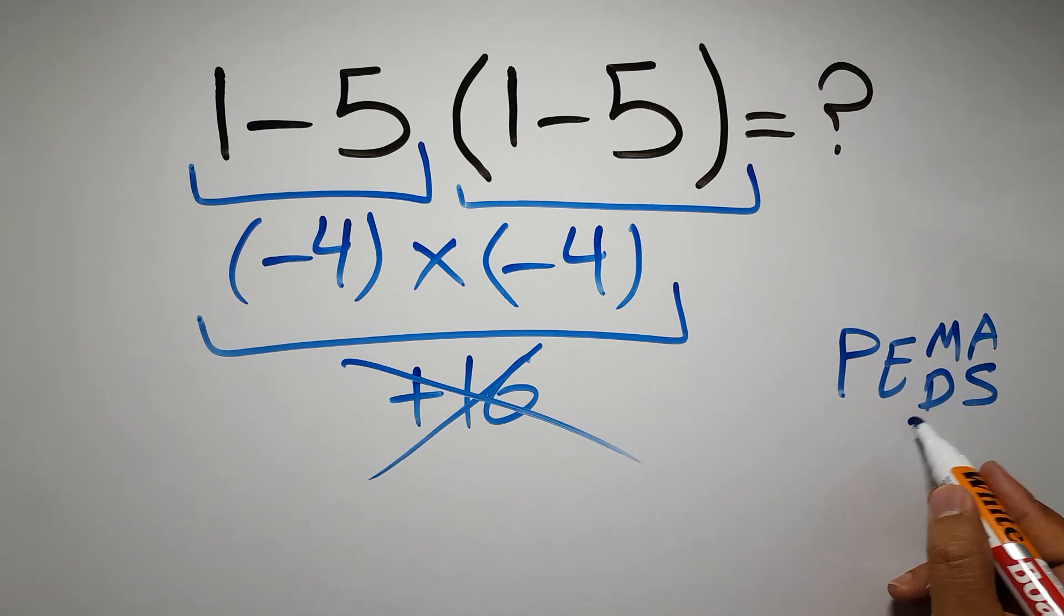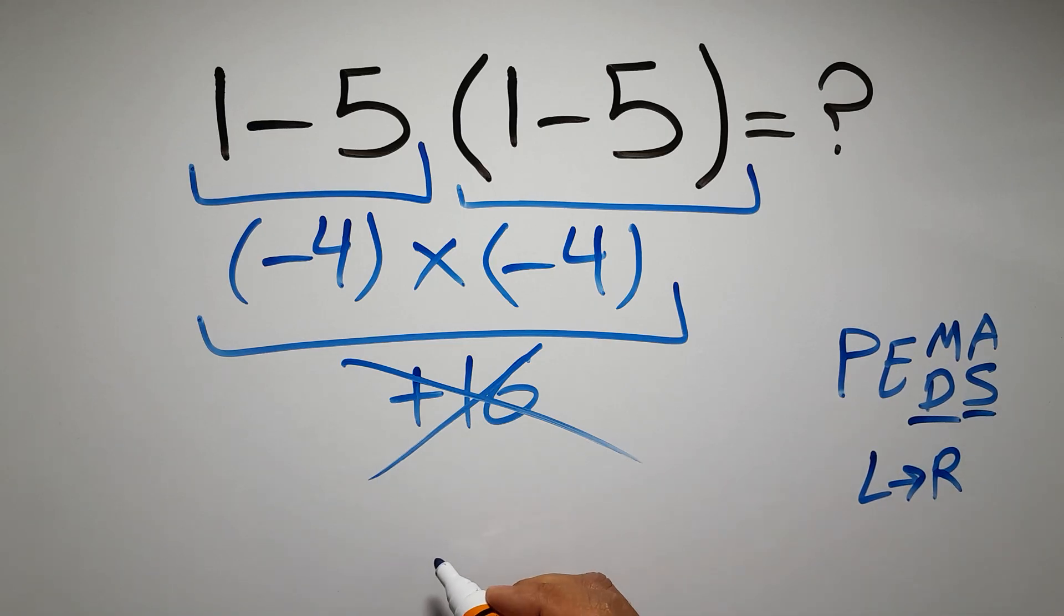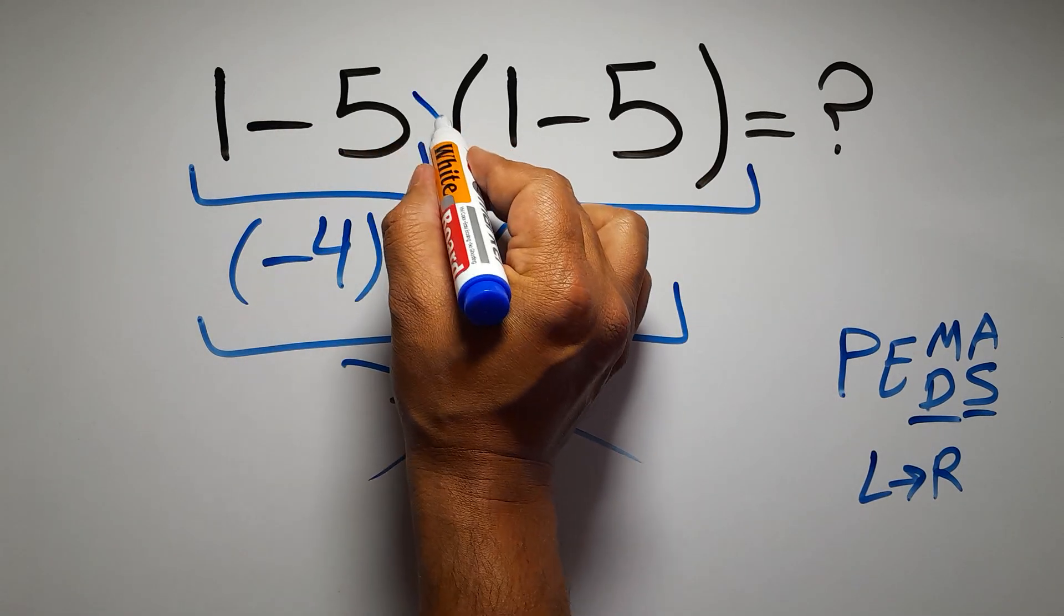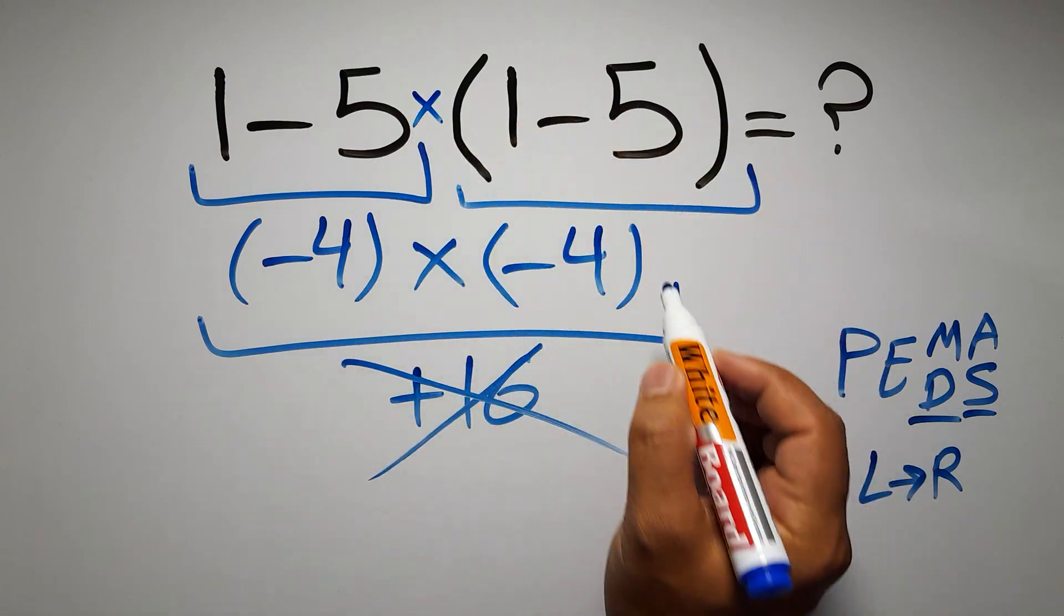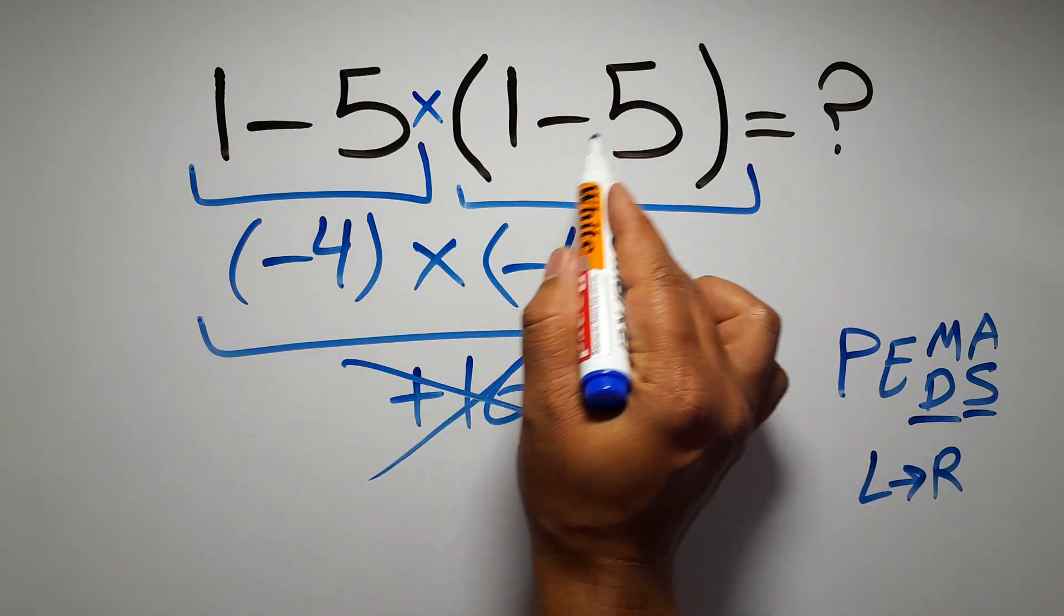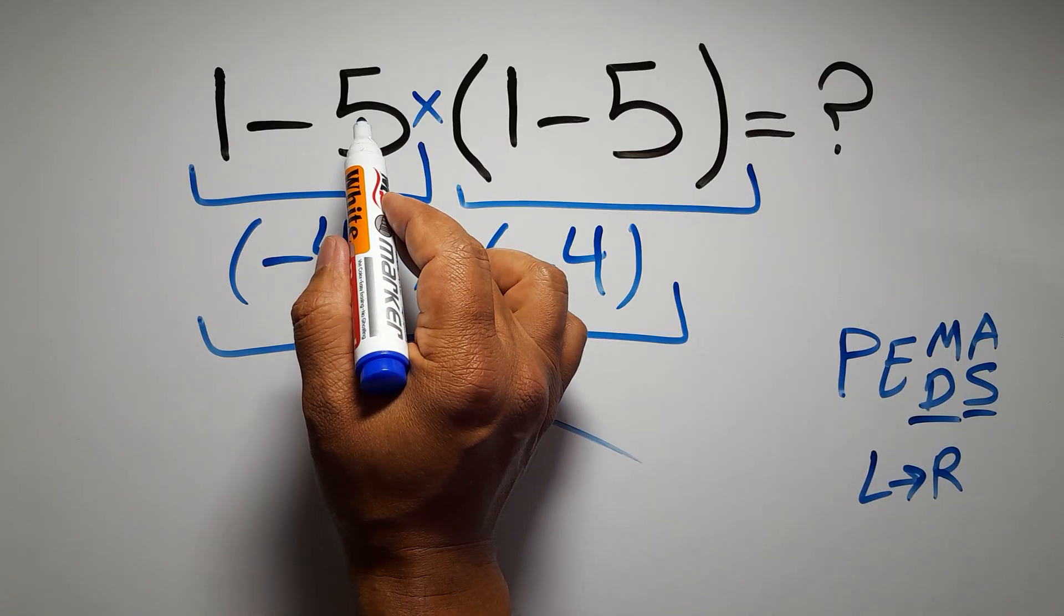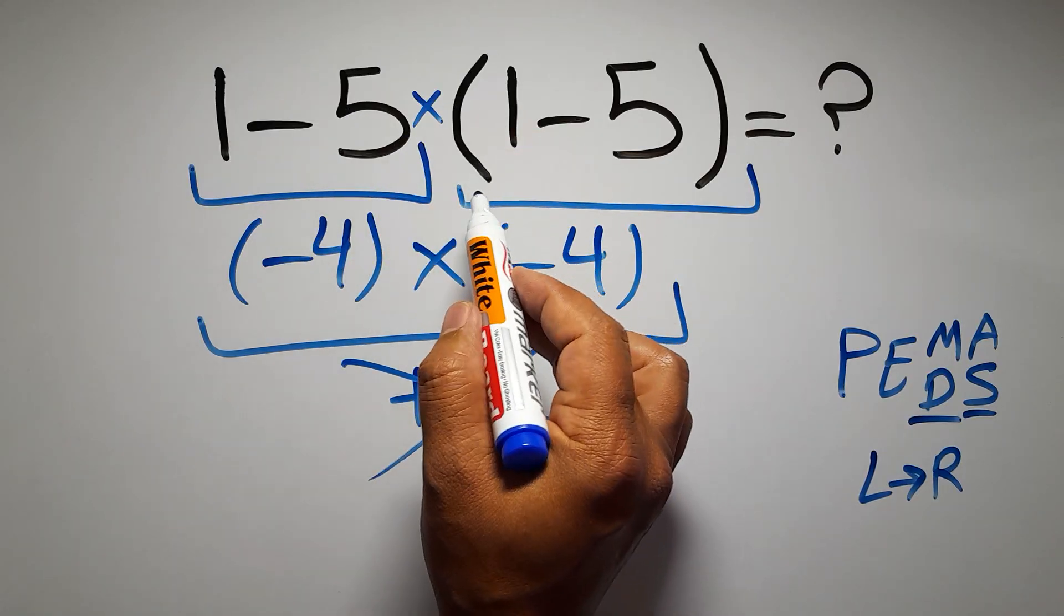Remember that multiplication and division have equal priority and we have to work from left to right, and the same applies to addition and subtraction. In this expression we have one subtraction, one multiplication, and one parentheses. Inside these parentheses we have one subtraction. Here we have a multiplication because in mathematics when a number is placed next to parentheses it means multiplication, and we usually don't write a multiplication sign for brevity.